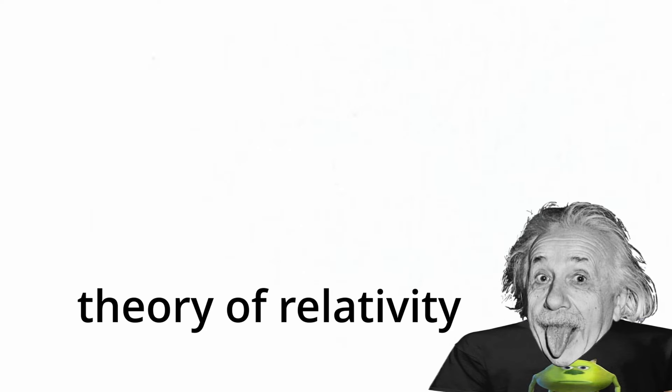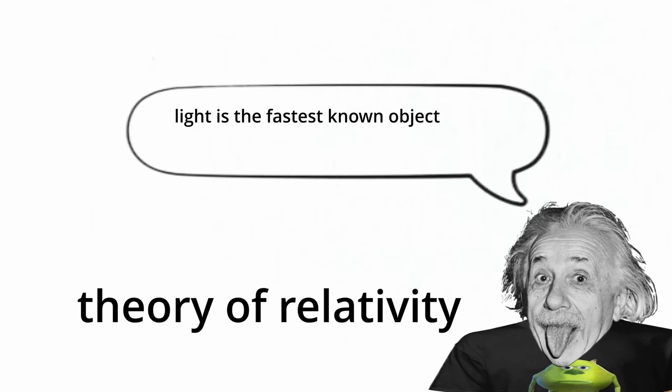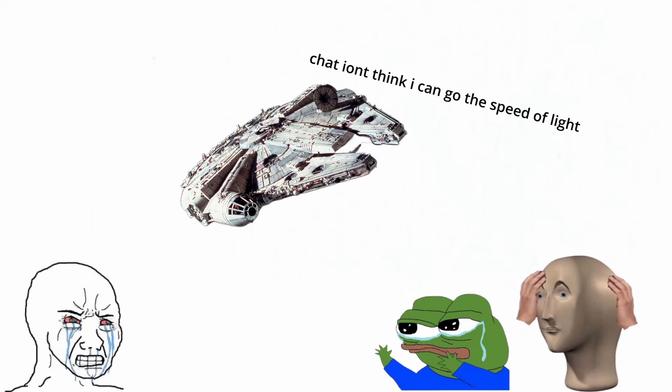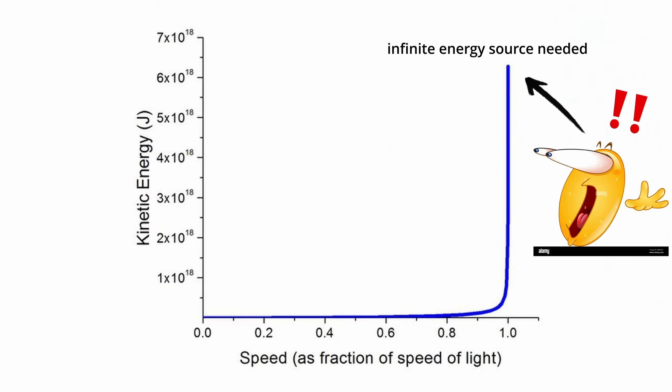According to Einstein's theory of relativity, light is the fastest known object or the physical limitation of our universe. And contrary to what Han Solo says, it's actually impossible for us humans to surpass the speed of light. This is because an infinite amount of energy would be required to achieve the speed of light.